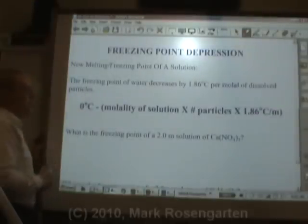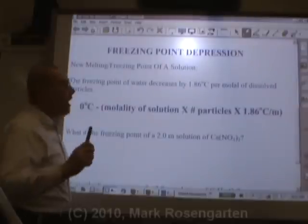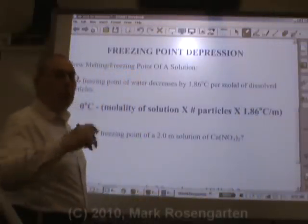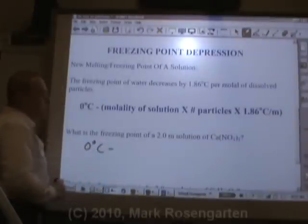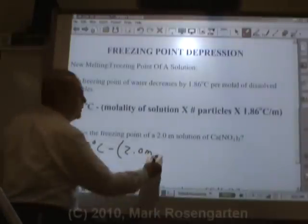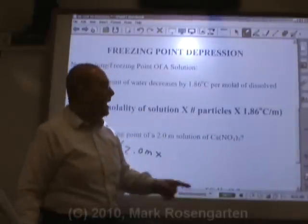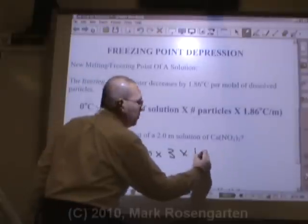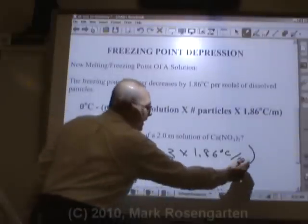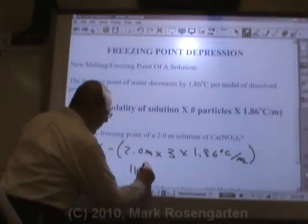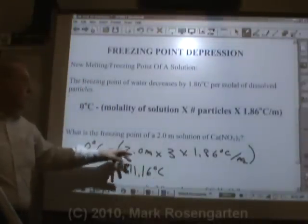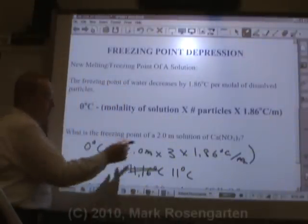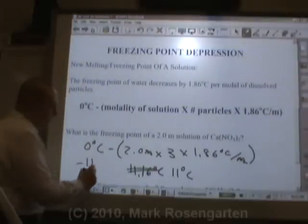So we're going to start at zero degrees Celsius and subtract the molality of the solution times the number of particles that the solute breaks up into when ionized in the water, times 1.86 degrees Celsius per molal. For the freezing point of a two molal solution of calcium nitrate — as we saw before, calcium nitrate breaks up into three ions: one calcium ion and two nitrate ions. Multiply by three, times 1.86 degrees Celsius per molal. Molality cancels and you get 11.16 degrees Celsius. Rounding to two sig figs, that's 11. Zero minus 11 gives a new freezing point of negative 11 degrees Celsius.